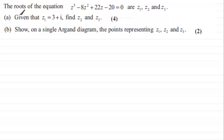In part a, we're given that z1 equals 3 plus i. And what we've got to do is find z2 and z3. And then finally in part b, we've got to show on a single Argand diagram the points representing z1, z2, and z3.